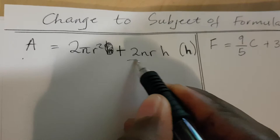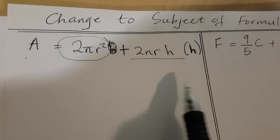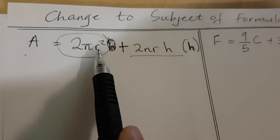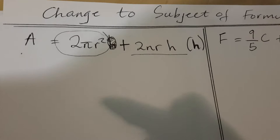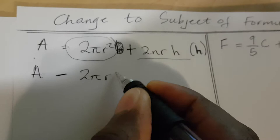To make h the subject, h is in the term 2πrh, so we need to get rid of the other terms. We remove 2πr² by moving it across the equal sign, so it becomes negative. That gives us A minus 2πr² equals...